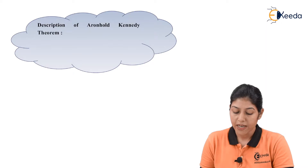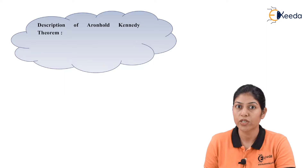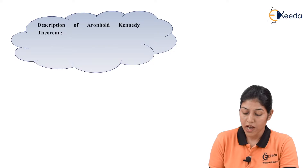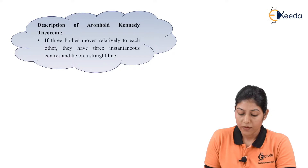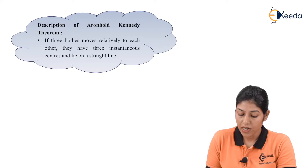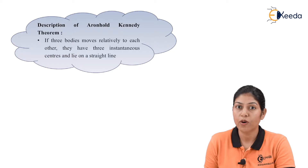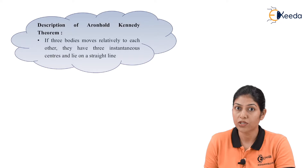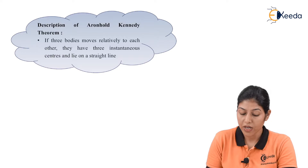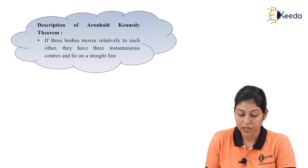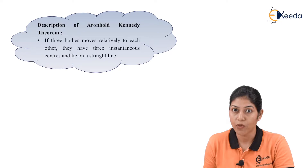The Arnold-Kennedy theorem is generally considered for a structure which consists of three links that are in relative motion. As per the Arnold-Kennedy theorem, if three bodies move relatively to each other, they have three instantaneous centers lying on a straight line. If we consider three links connected to each other with pin joints forming turning pairs, all the instantaneous centers must lie on a straight line.